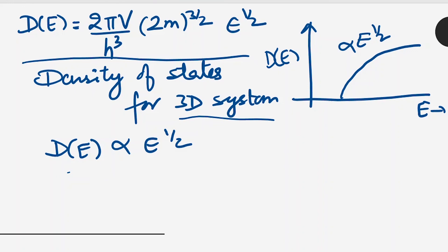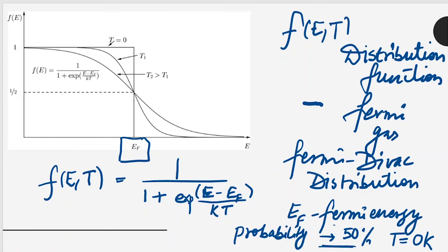Now moving on to the next curve, that is the distribution function. At temperature T, the electron starts gaining energy and moving to higher energy levels. So this square plot becomes more spread as electrons occupy higher energy levels. This is our T1 plot, which is higher than absolute zero. If we further increase to T2, which is higher than T1, the range of energy levels the electron is occupying increases.